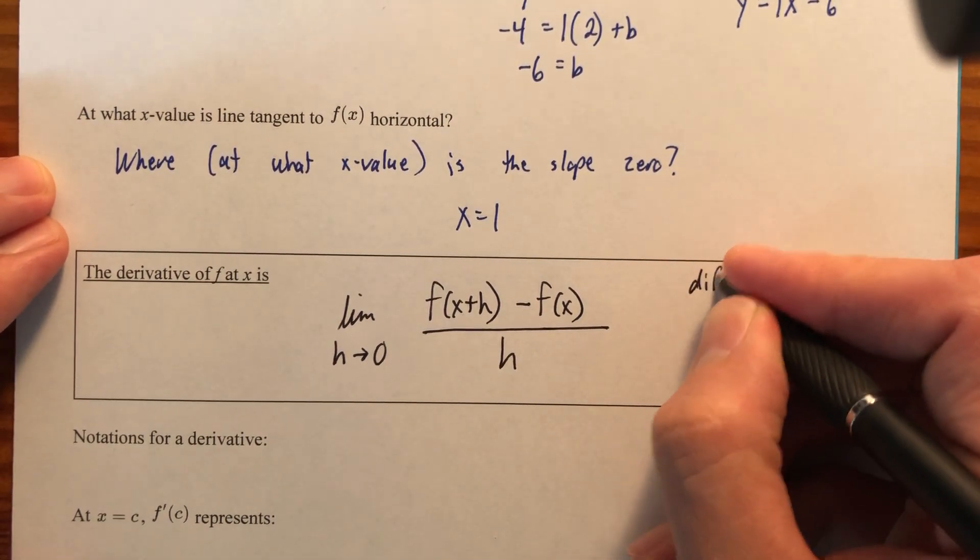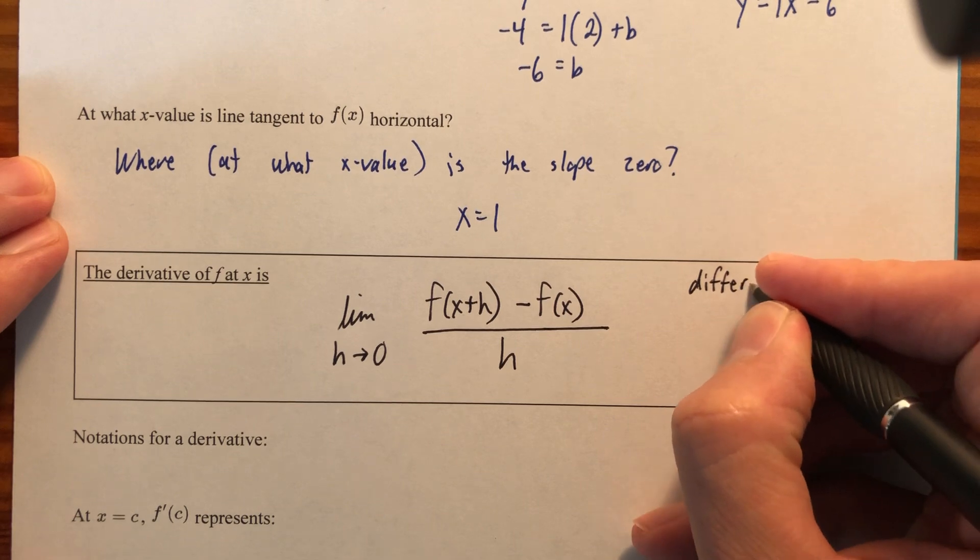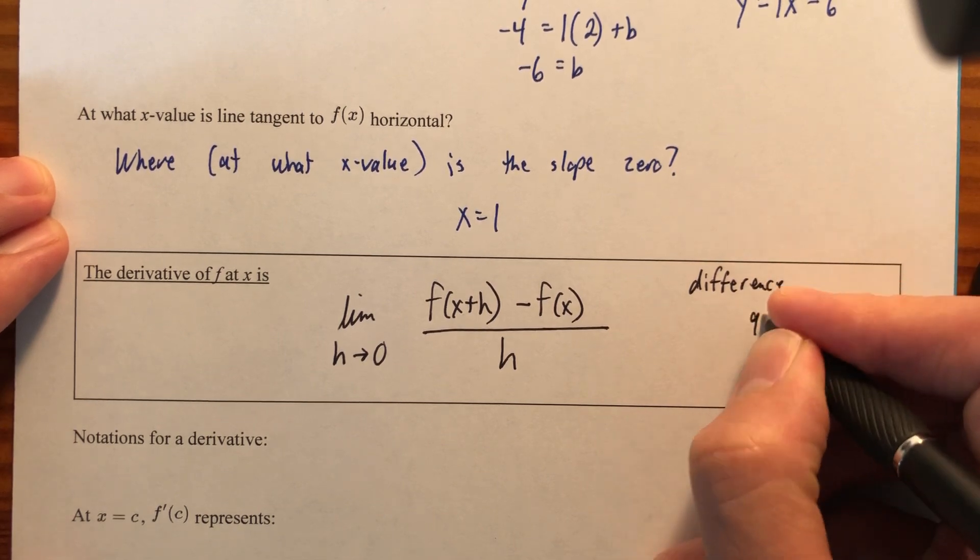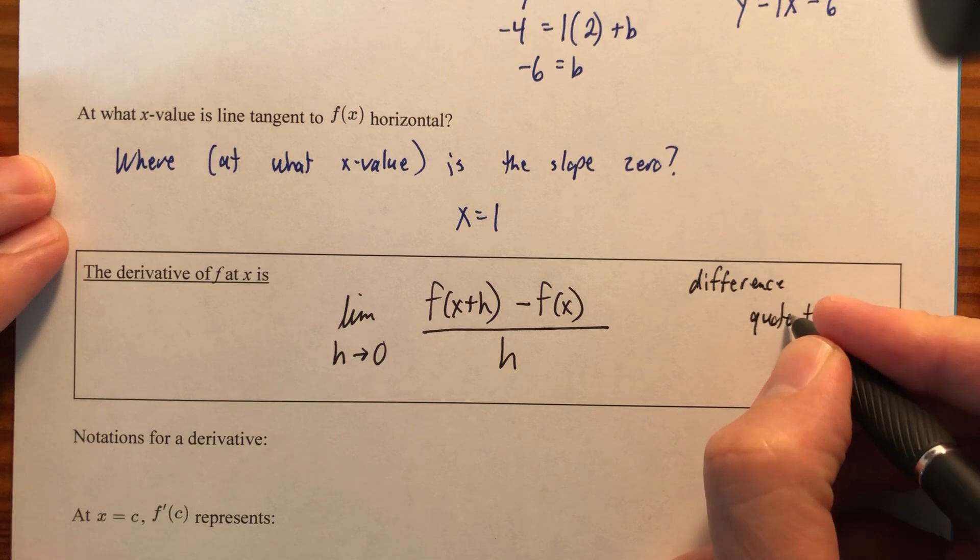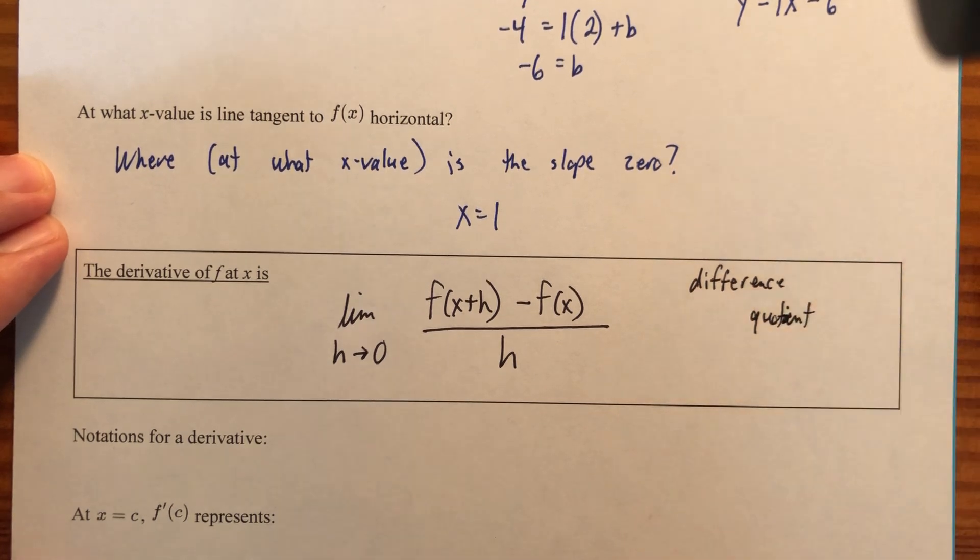This is called the difference quotient, and you saw it in the last set of notes. Quotient, let's spell it correctly, q-u-o-t-i-e-n-t, and we are going to have a little notation for it.